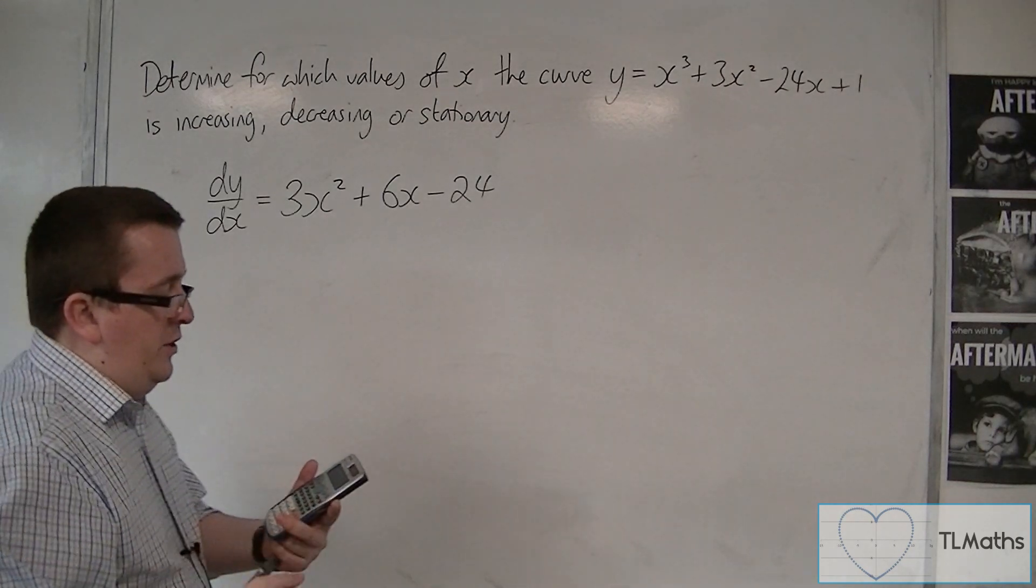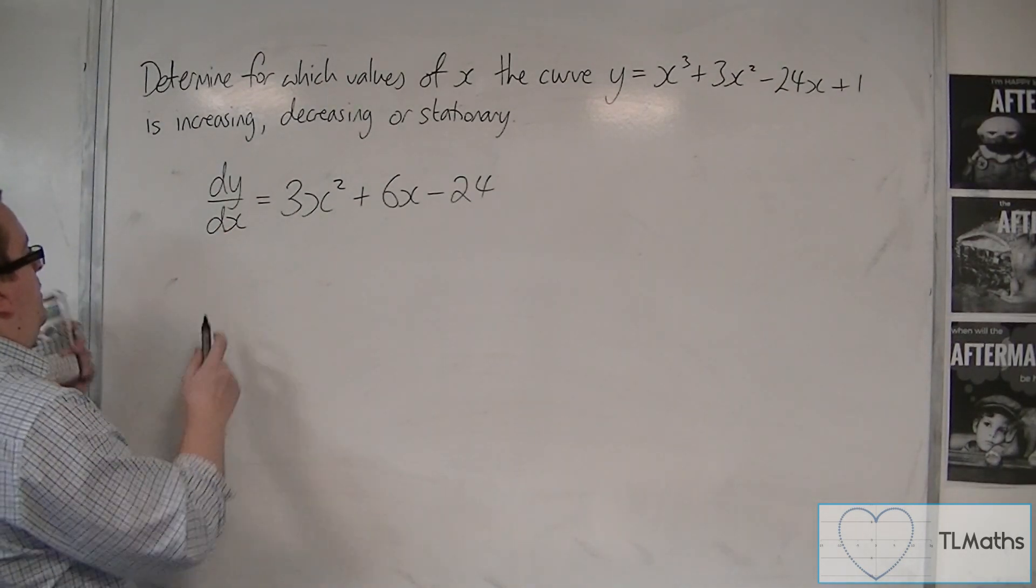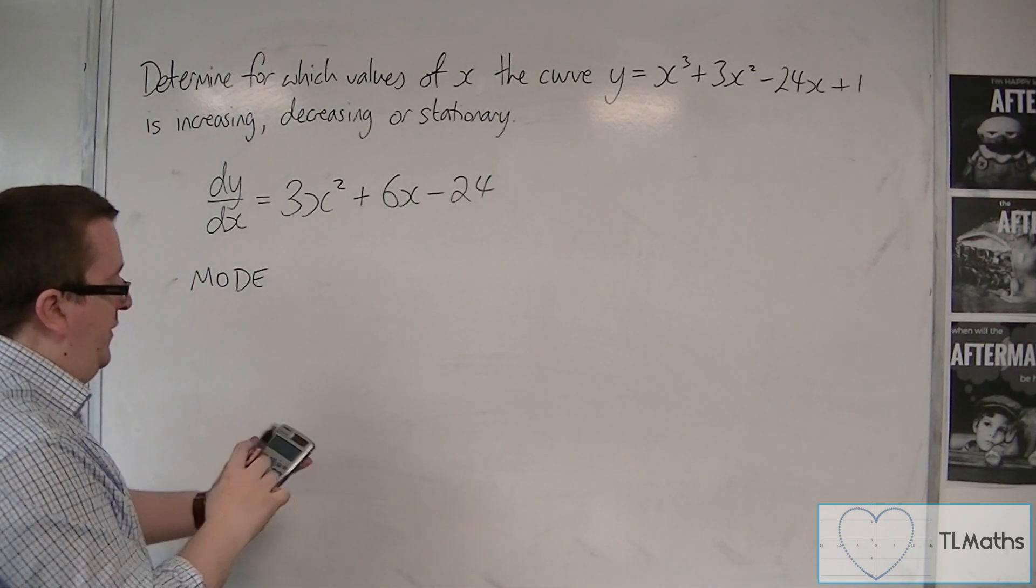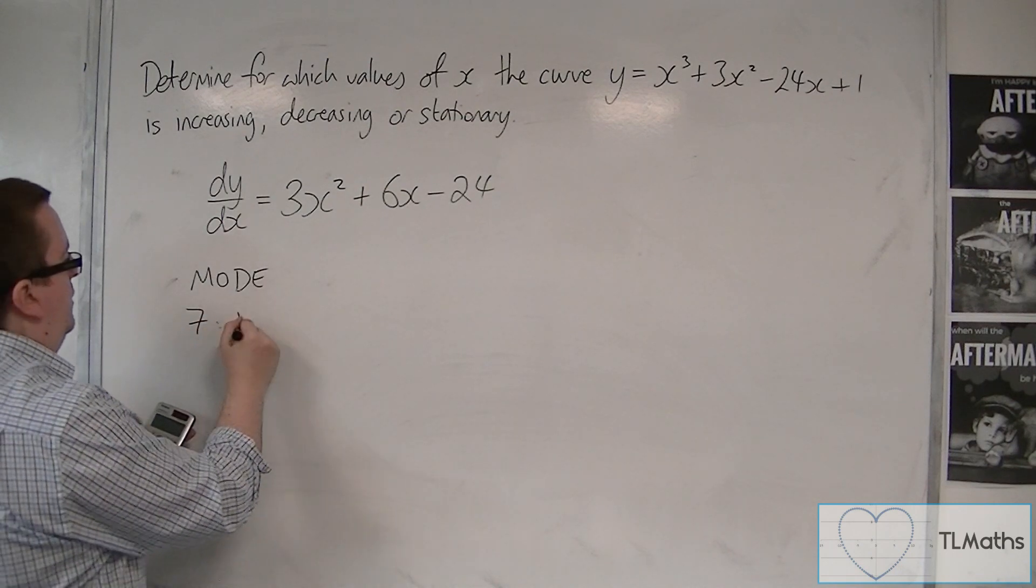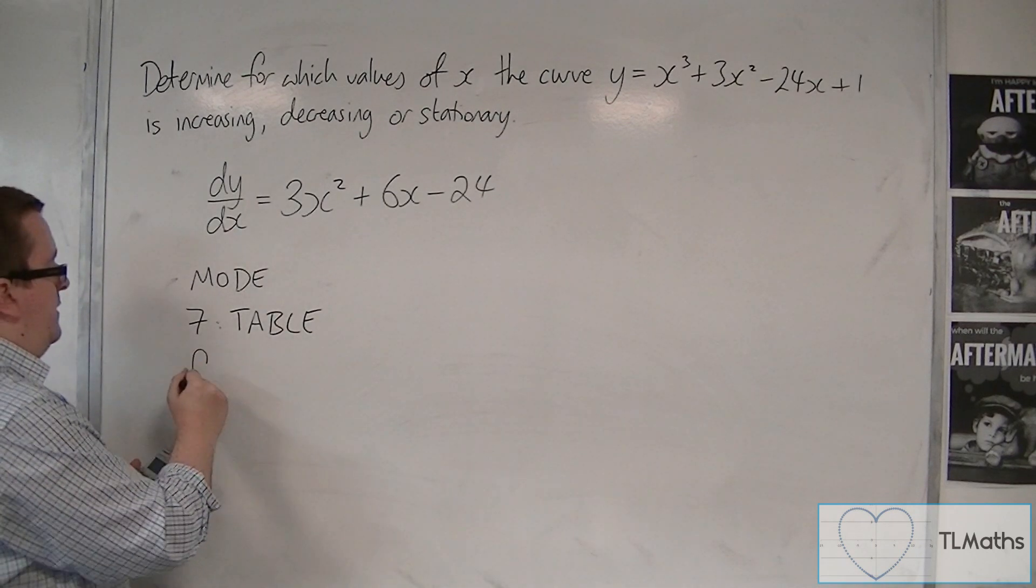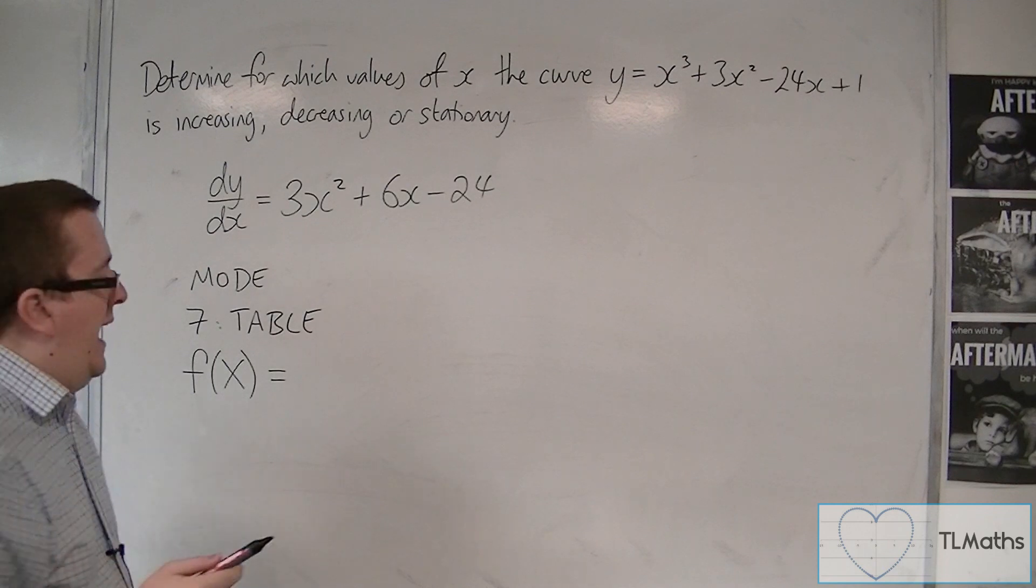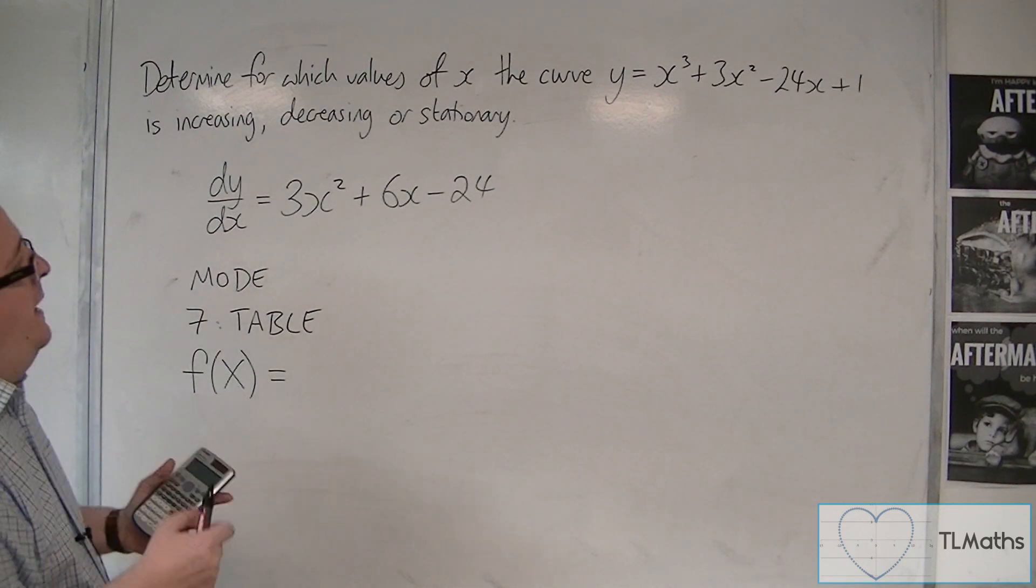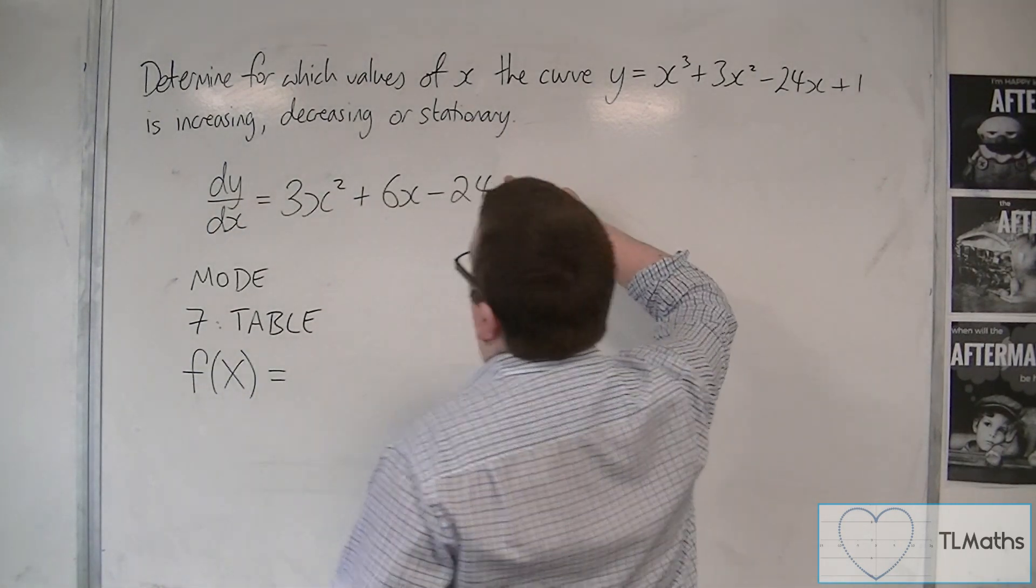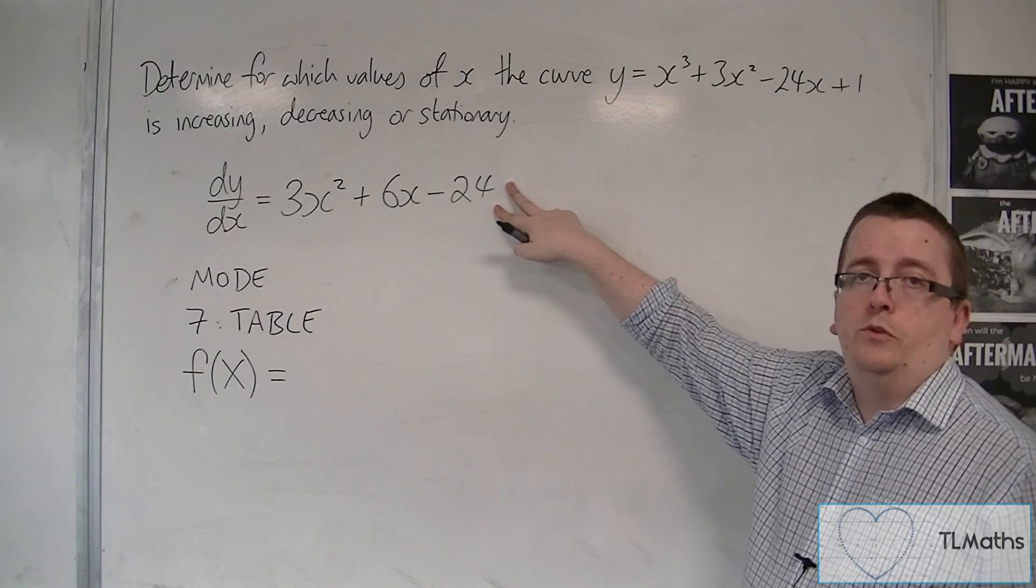So what we're going to do is go into mode. You want to go into mode, and then press number 7, so 7 table. What you should have on your screen is something that looks like that, f(x) equals. What it's waiting for you to do is to type in this 3x²+6x-24.